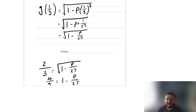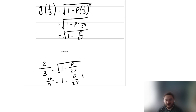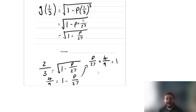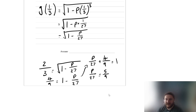We can add p over 27 to both sides — this is optional, but I don't like dealing with a negative p over 27. So we get p over 27 plus 4 ninths equals 1. Then p over 27 equals 1 take away 4 ninths, which gives 5 ninths. Now multiply both sides by 27 to get p equals 5 times 27 over 9, which is 135 over 9.